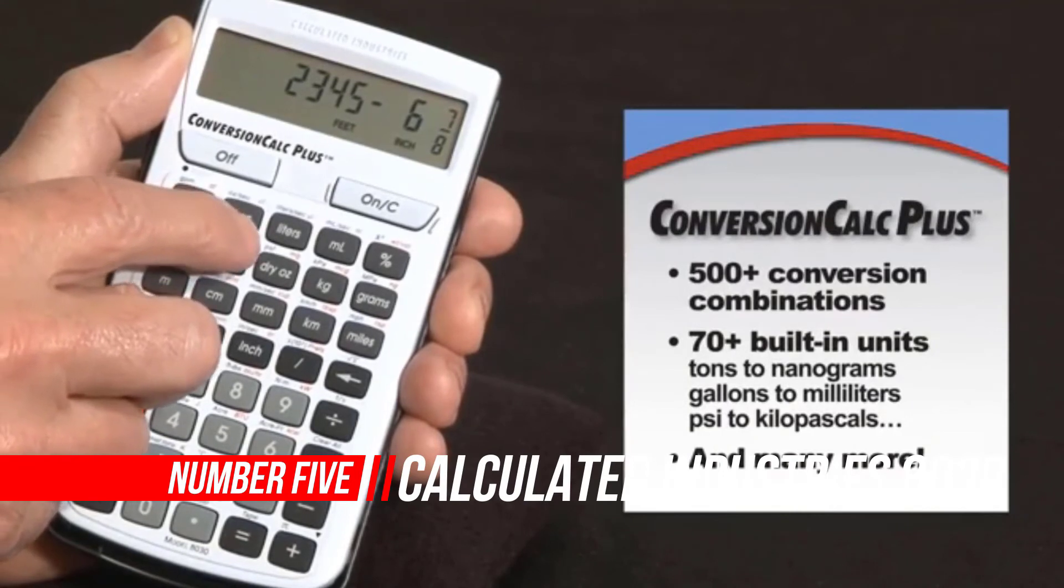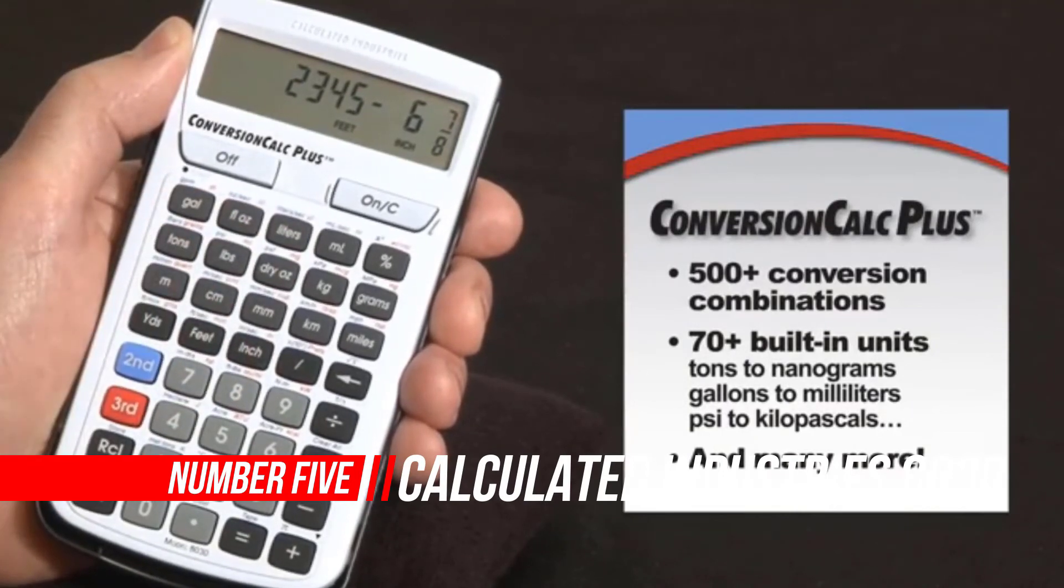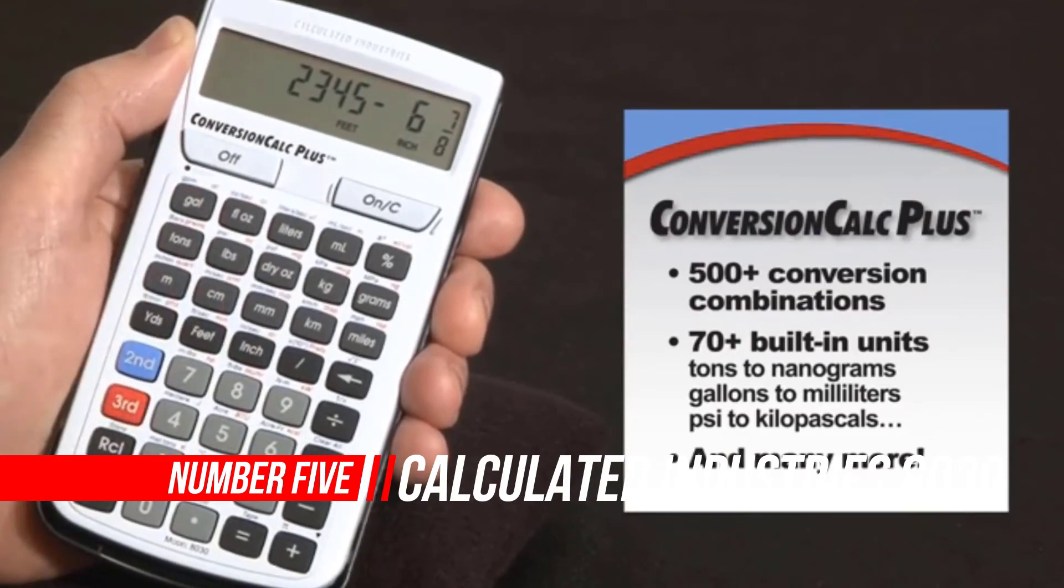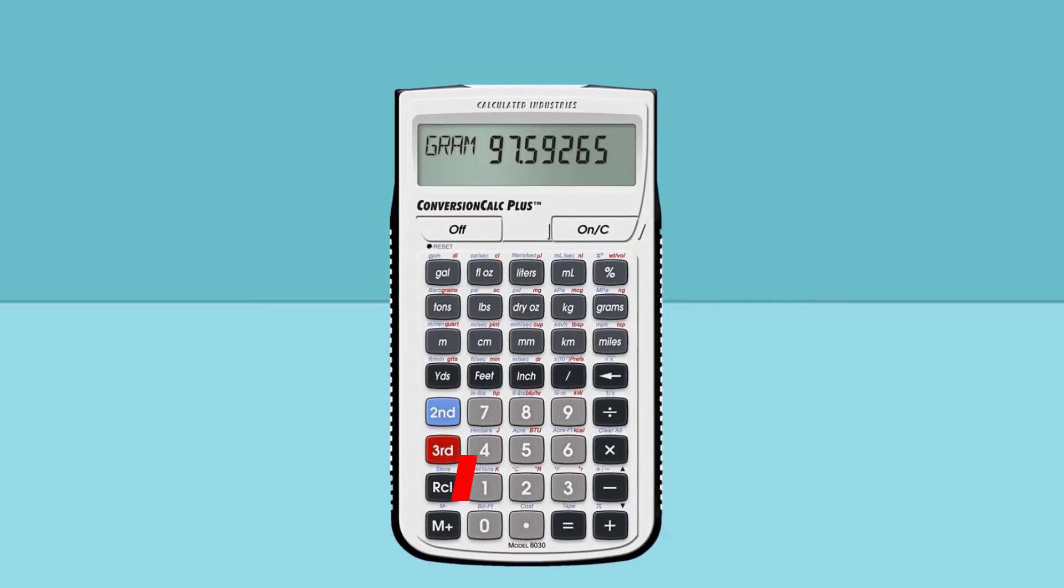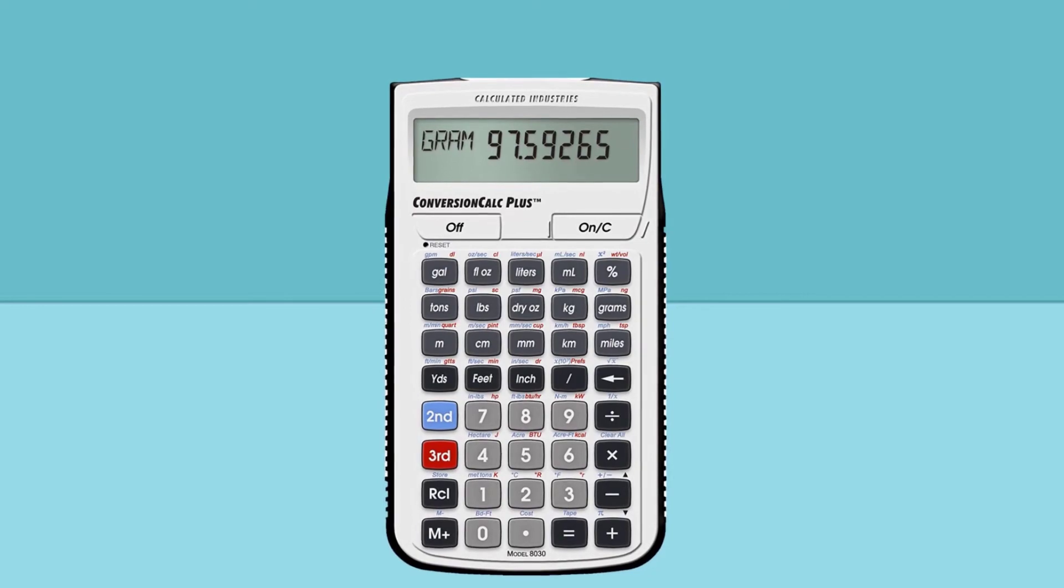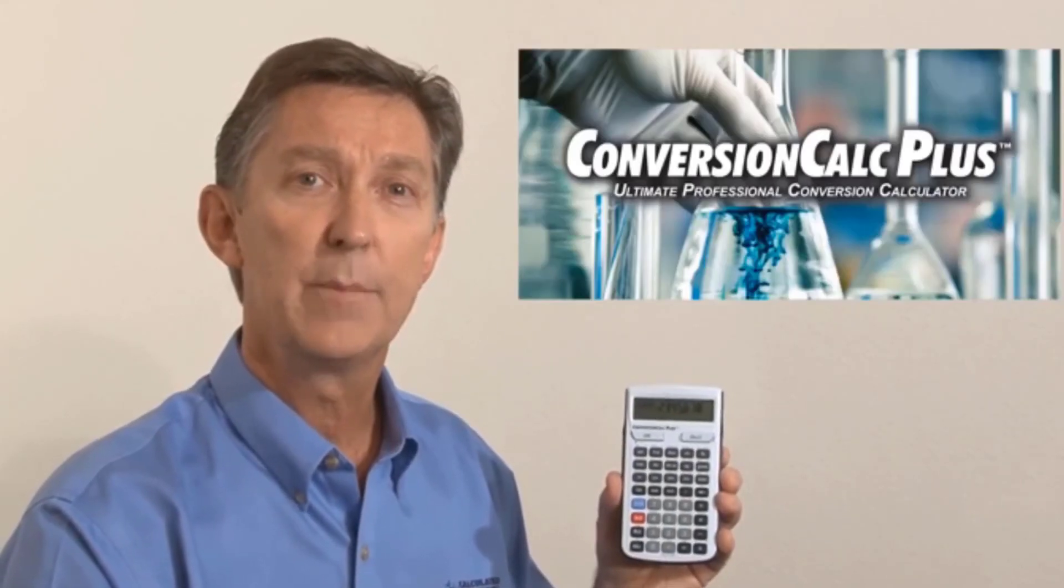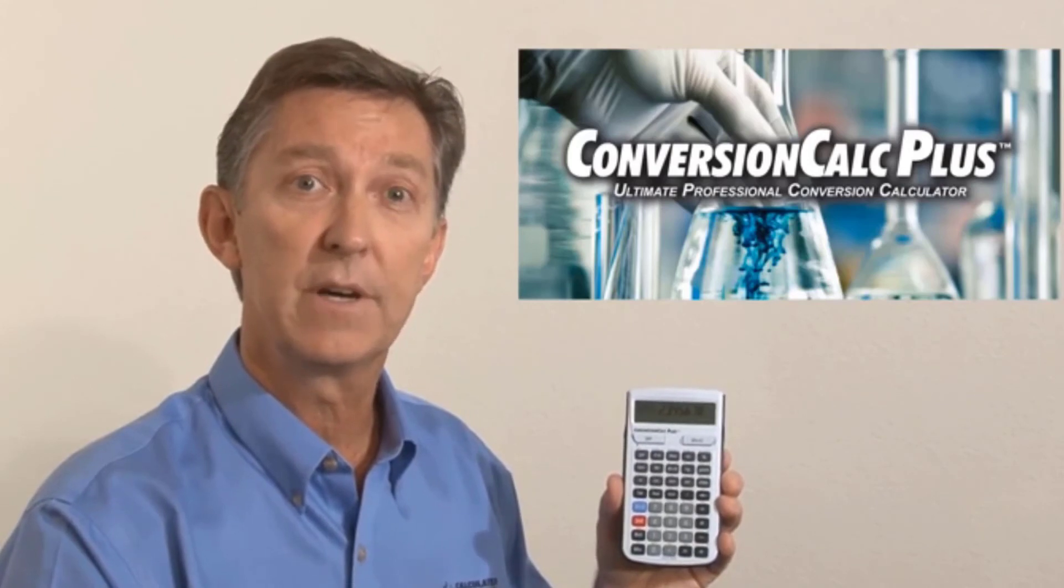Number 5. Calculated Industries 8030 Conversion Calc Plus Ultimate Professional Conversion Calculator. The Conversion Calc Plus is an easy-to-use and powerful handheld calculator that provides more than 500 conversion combinations using 70 built-in standard, metric and other units of measure.